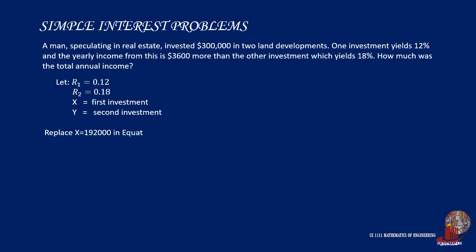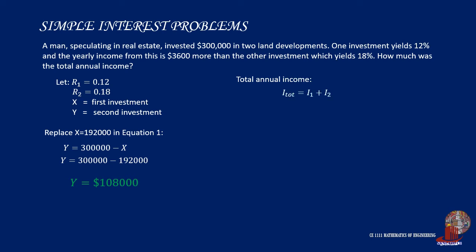Replacing X as $192,000 in equation 1, Y equals 300,000 minus 192,000, giving Y equals $108,000. The total annual income is the sum of both interests: PRT1 plus PRT2, computed as 192,000 times 0.12 plus 108,000 times 0.18, which equals $42,480.